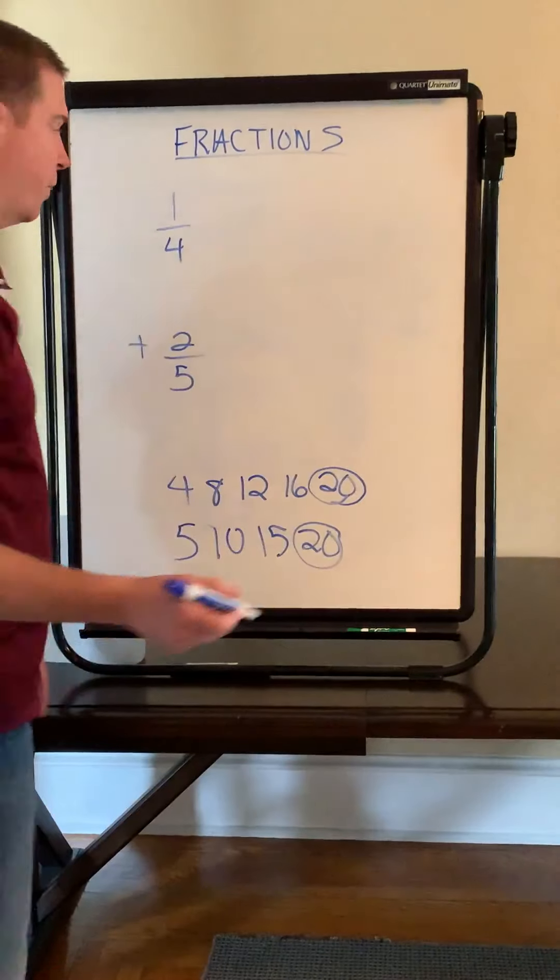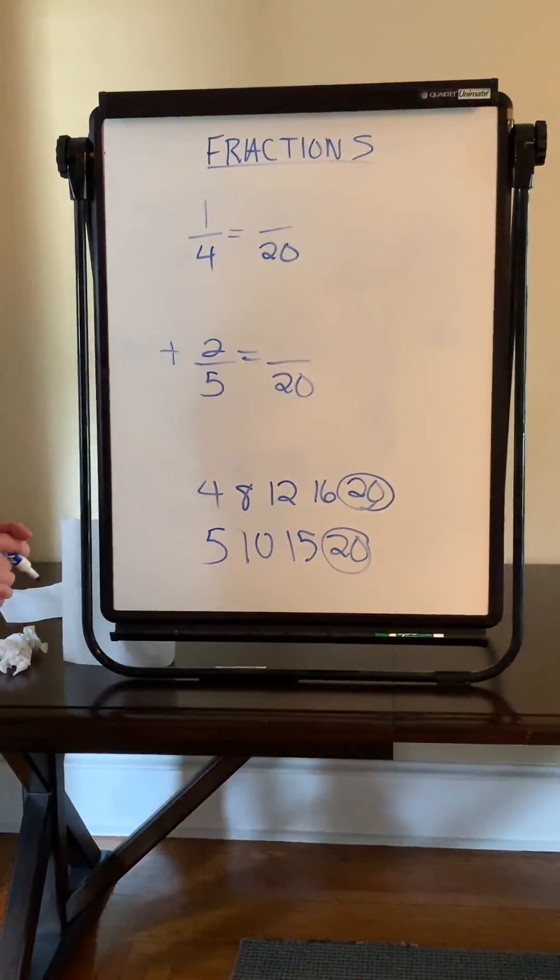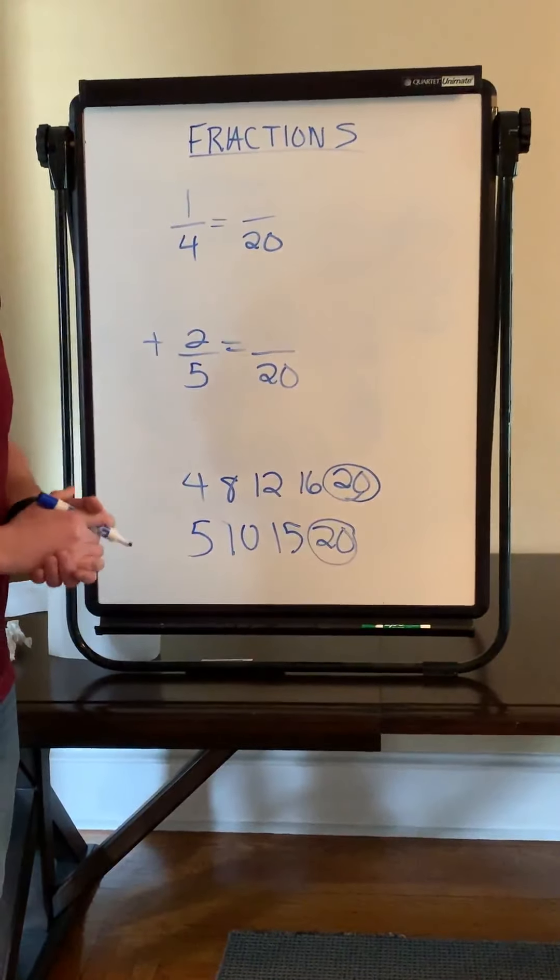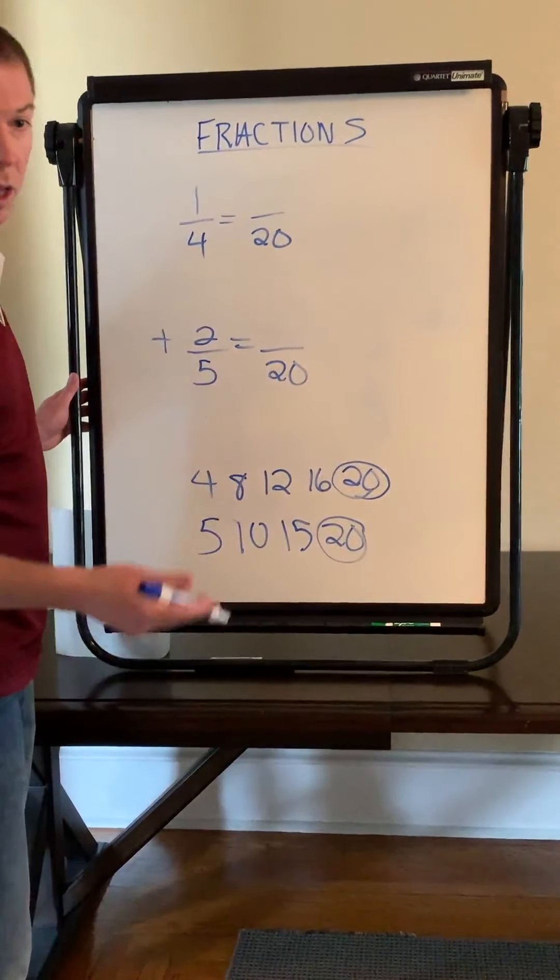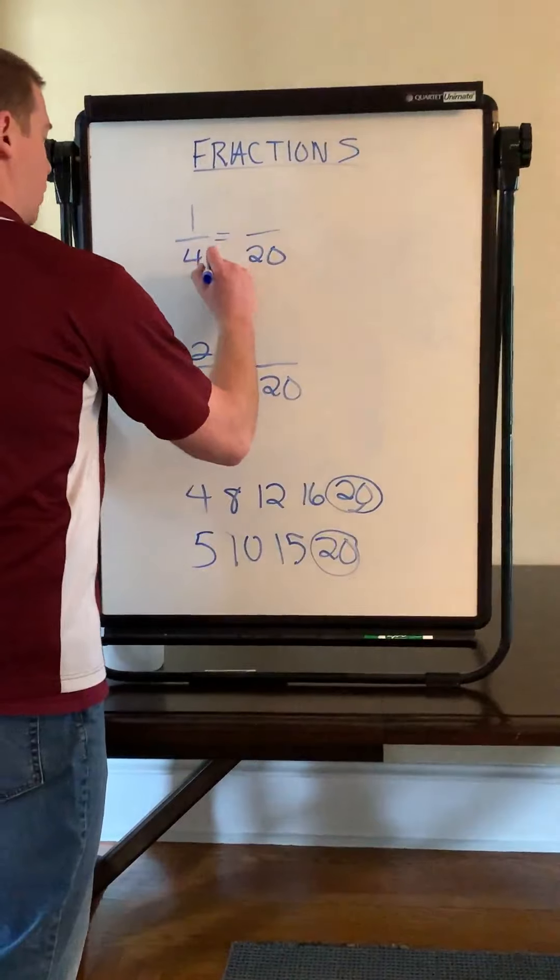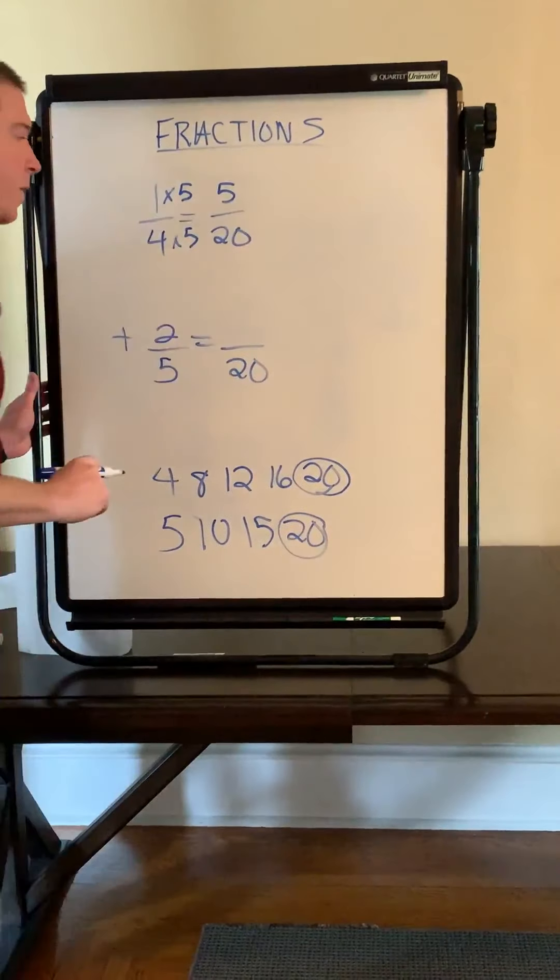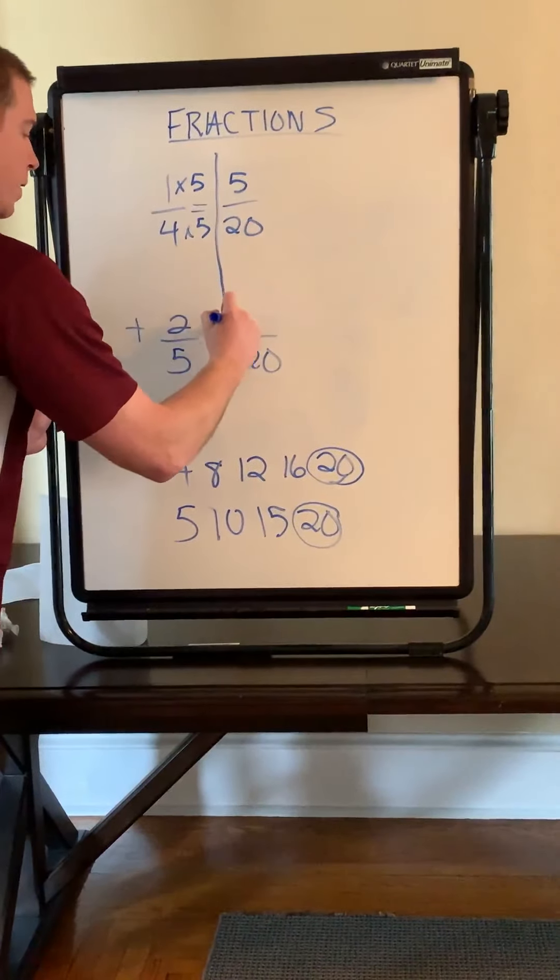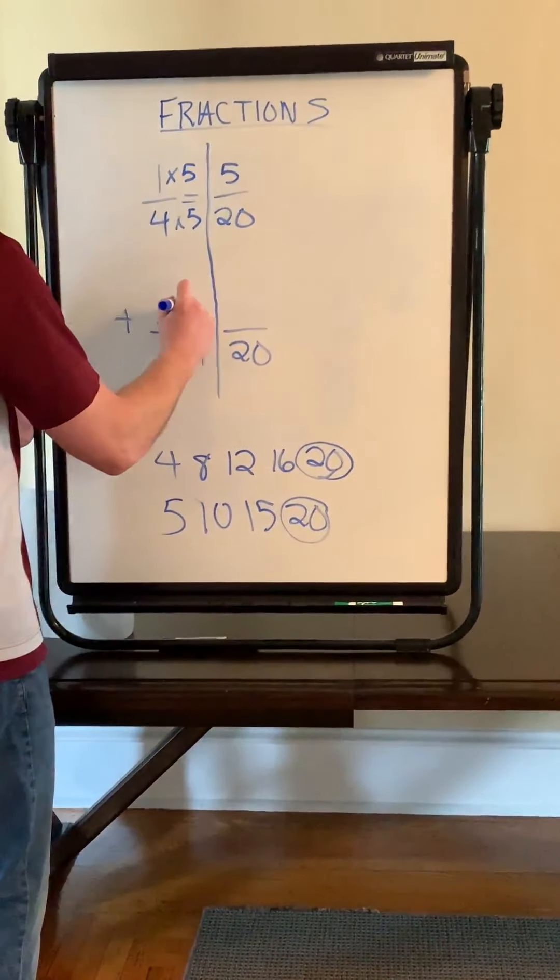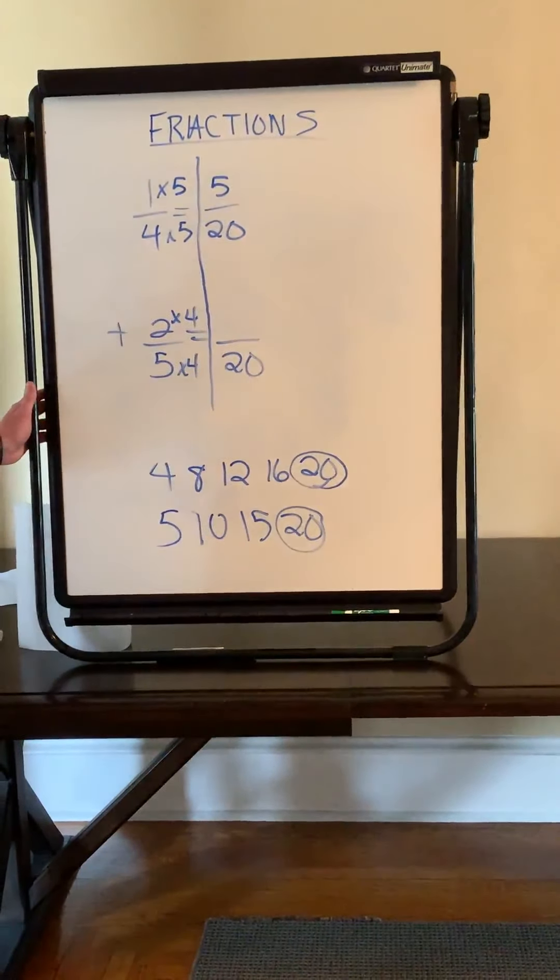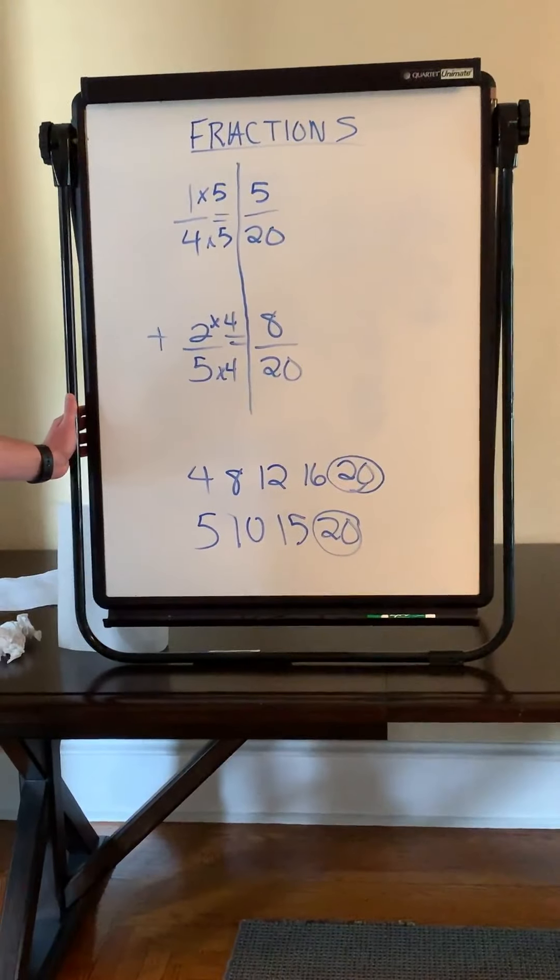So now I'm going to write equivalent fractions that both have a denominator of 20. Now in order to write equivalent fractions you need to do the same thing to the top and bottom of a fraction. So in this case with 1/4 I went from a 4 to a 20. How did I do that using either multiplication or division? Well, I multiplied by 5. So 4 times 5 is 20. 1 times 5 is 5 and my equivalent fraction for 1/4 becomes 5/20. Same thing down here. How did I go from a 5 to a 20? 5 times 4. So I need to do the same thing to the numerator. 2 times 4 equals 8.